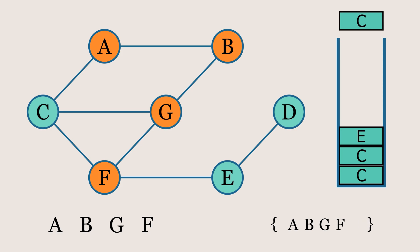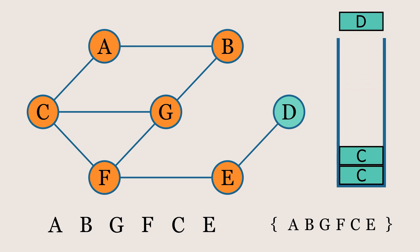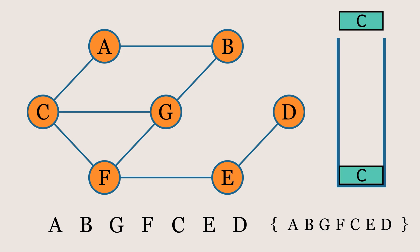Now we'll pop node C from the stack. As it is not in the visited set, we'll add it, print it, and mark it in orange. Since node C has no unvisited neighbors, we'll pop the next element from the stack, which is node E. Since E isn't in the visited set, we'll add it, print it, and mark it in orange. Node E has an unvisited neighbor, D, so we'll push D onto the stack. We'll pop D, and since it isn't in the visited set, we'll add it, print it, and mark it in orange. Node D has no unvisited neighbors, so we'll pop the stack. The popped element is C, but since C has already been visited, we'll skip it and pop again — we get C again, so we skip it. Now that the stack is empty, the algorithm stops here.